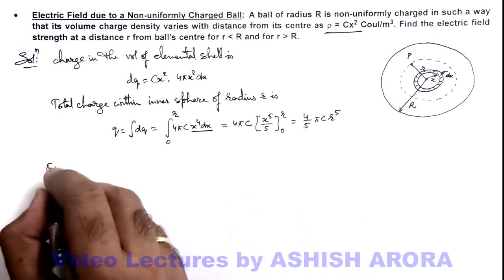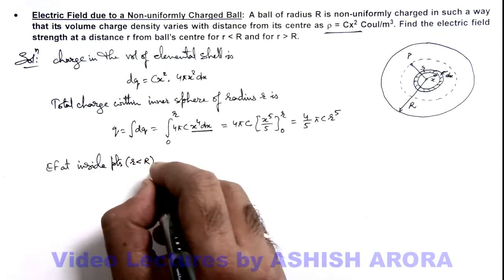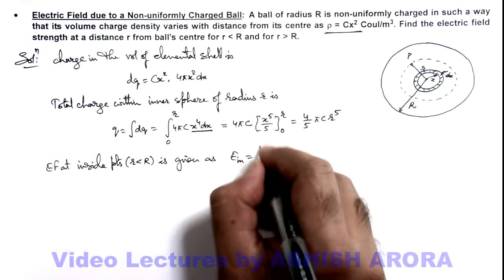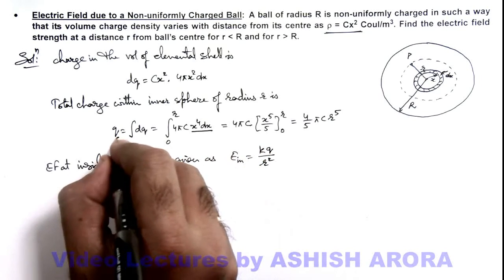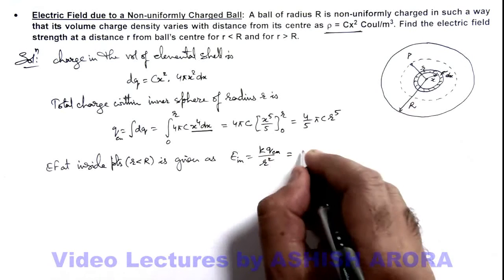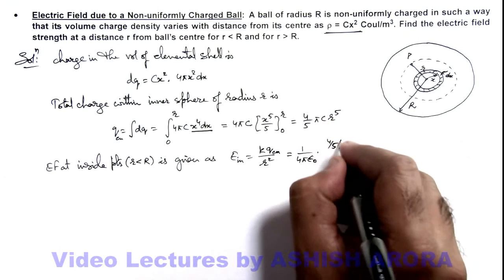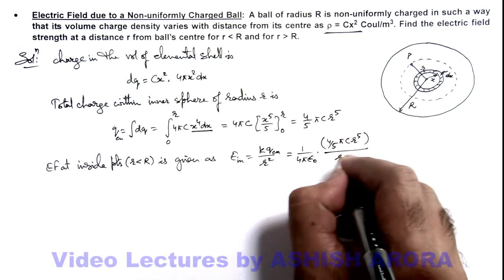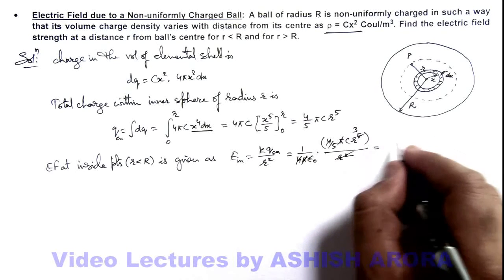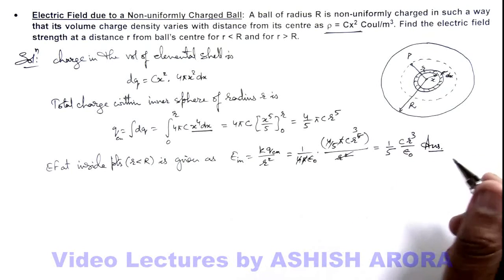We can now calculate the electric field at the inside point where r is less than R. It is given as E_inside = kQ/r², where Q is the enclosed charge within this region. Substituting k = 1/(4πε₀) and the enclosed charge (4/5)πcr⁵, the 4π terms cancel out along with r², and the result we get is E_inside = cr³/(5ε₀). That is the answer for the electric field at interior points.